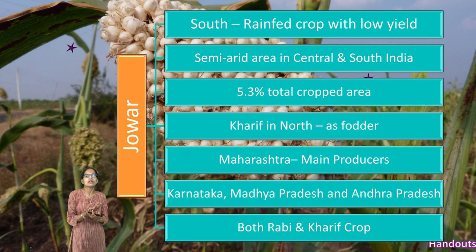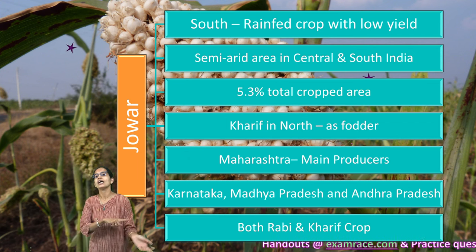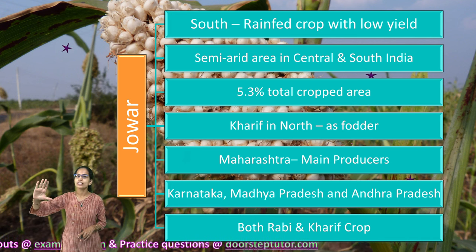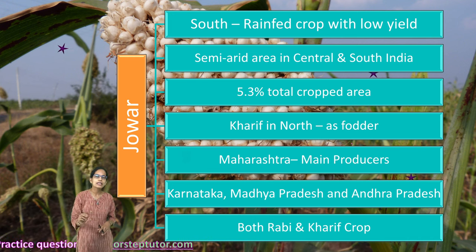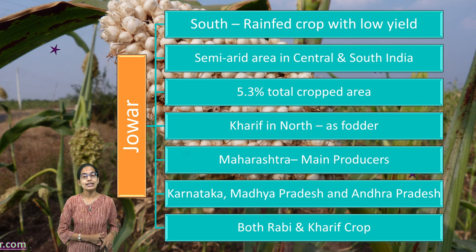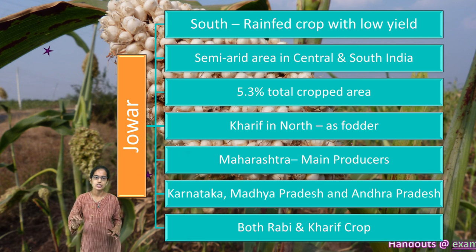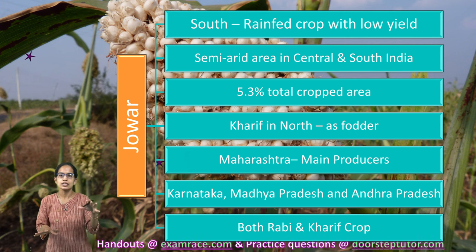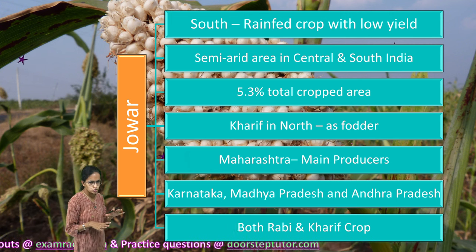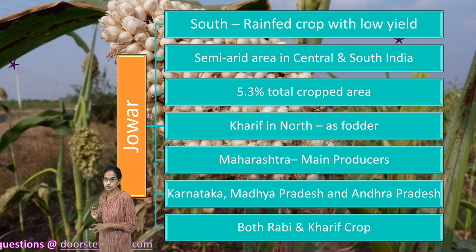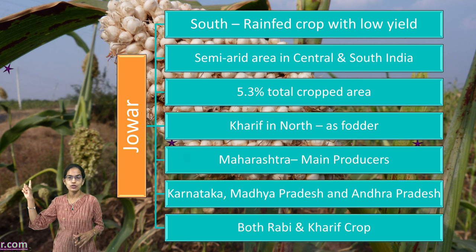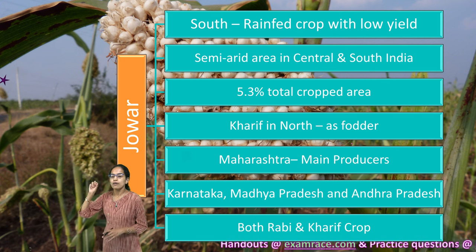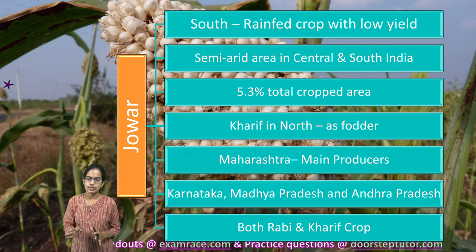Jowar is interesting because it is both a Kharif and a Rabi crop. In North India it acts as a Kharif crop used mainly for fodder, while in the South it is a rain-fed crop with lower yield. It is mainly grown in the semi-arid belts of Central and South India. Major producing states are Maharashtra, Madhya Pradesh, Karnataka, and Andhra Pradesh.